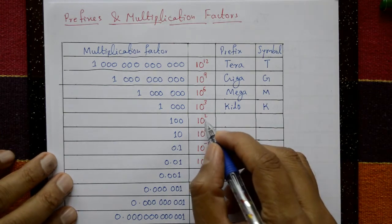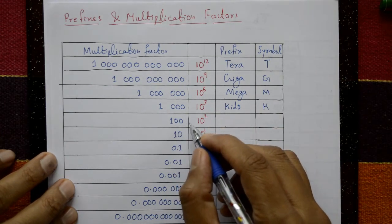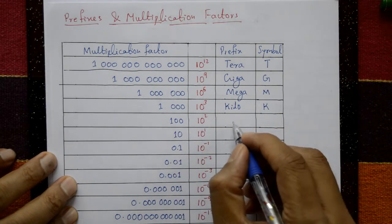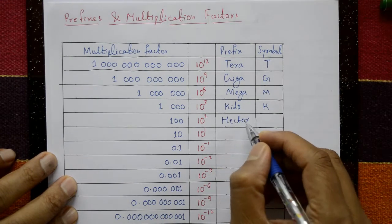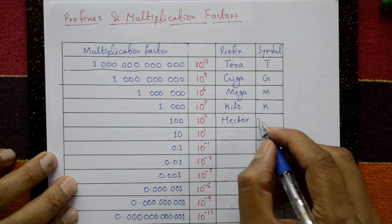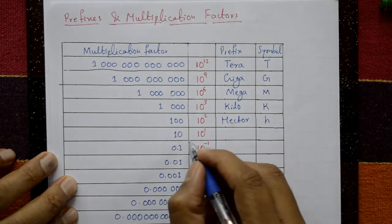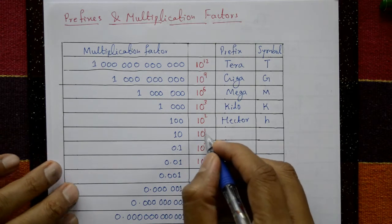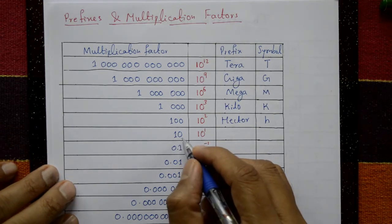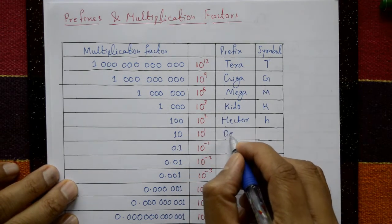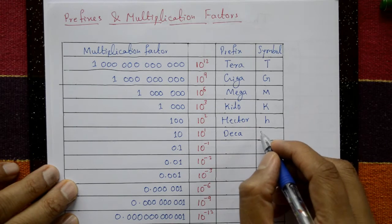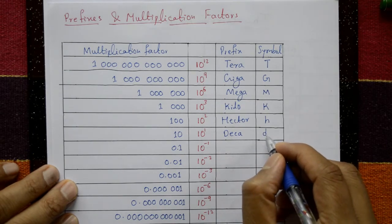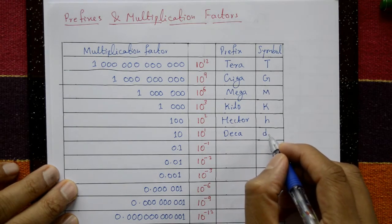10 to the power 2 — two zeros, hundred — this is hecto. The prefix is hecto and the symbol is H. 10 to the power 1 means 10 only — this is deka, and the symbol is DA.